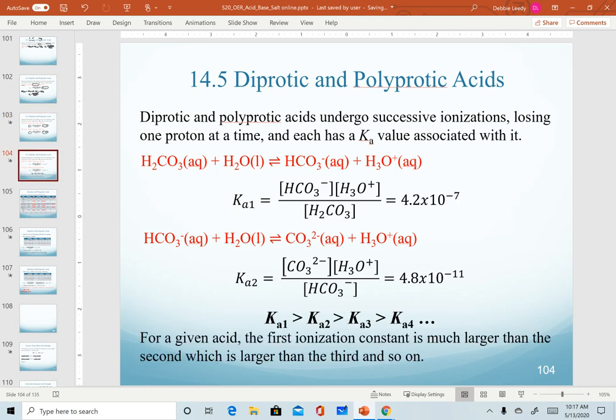So one of the key things you should recognize is not only how to write each equation for a polyprotic acid, but also to recognize the first K value is always going to be the largest. The second value is going to be smaller. The third and the fourth get successively smaller as we dissociate more.